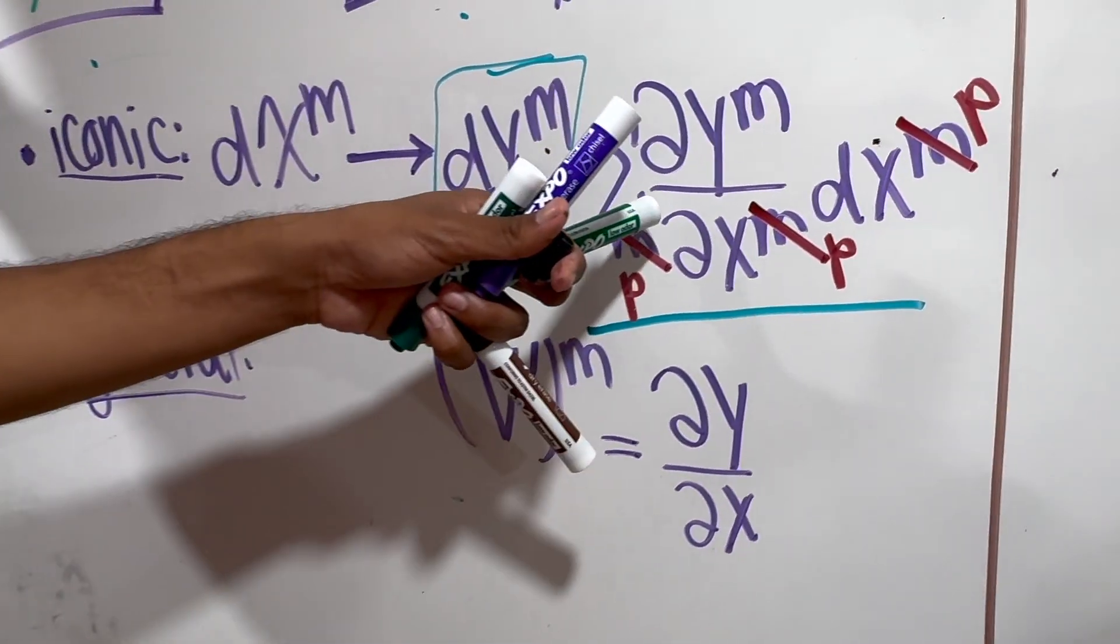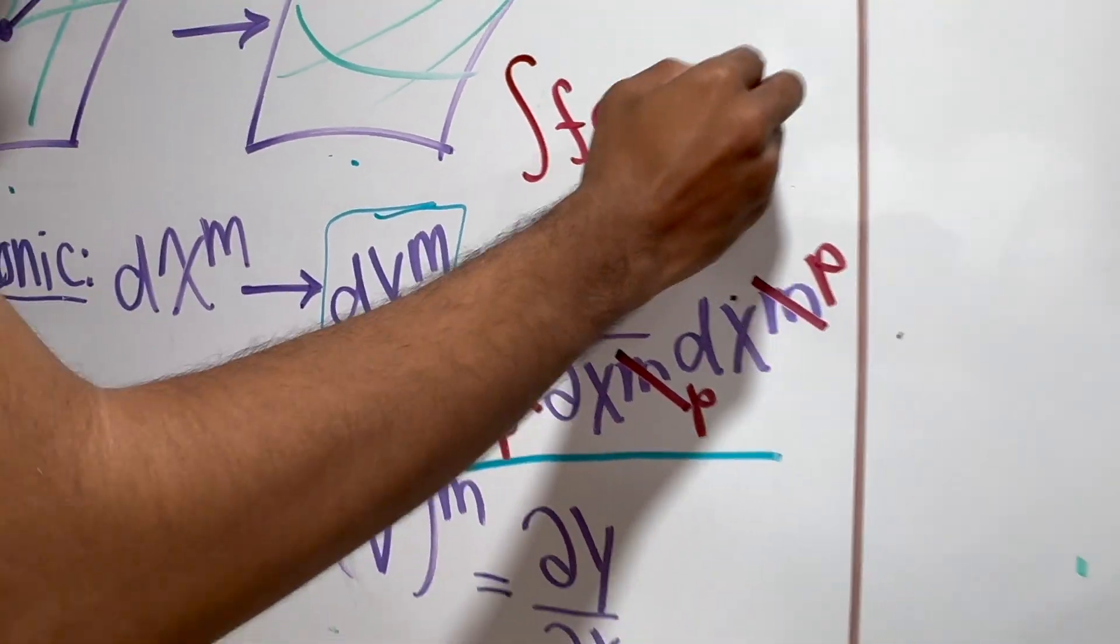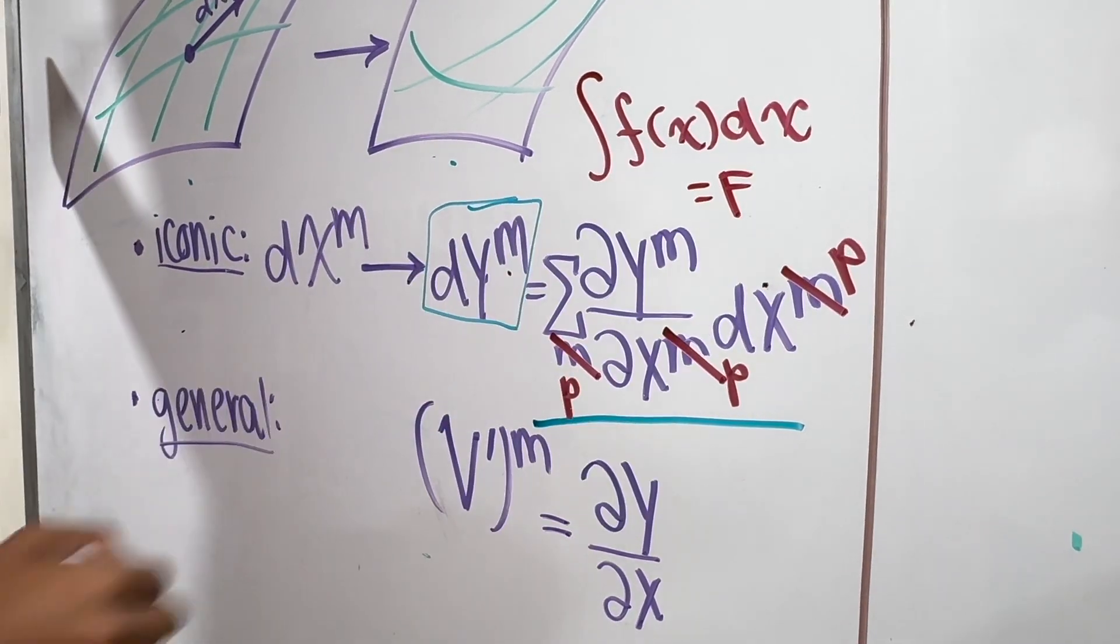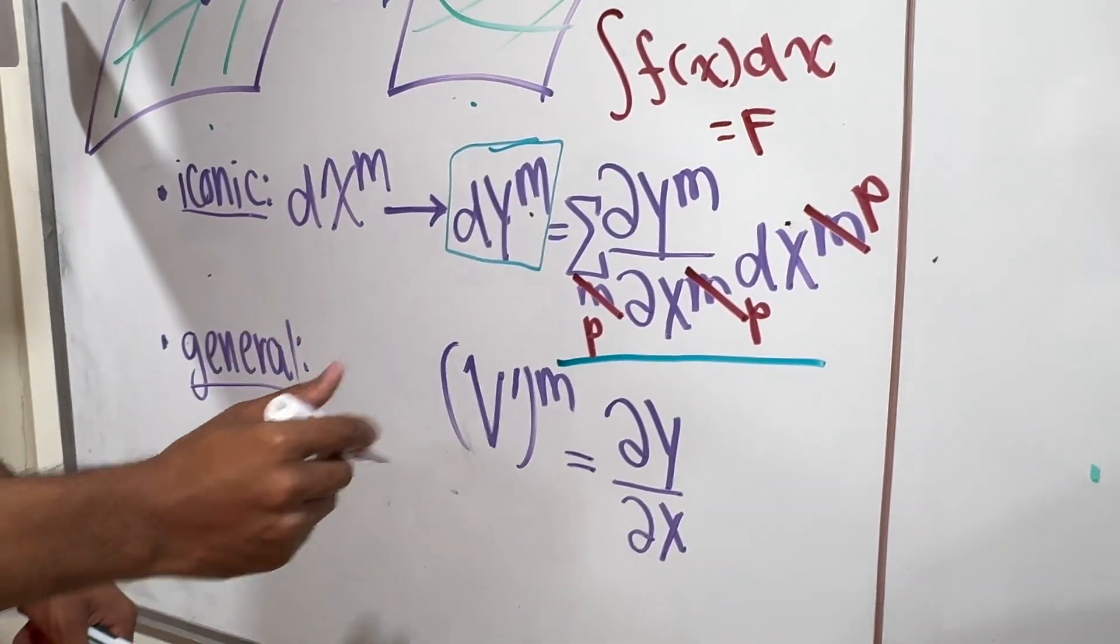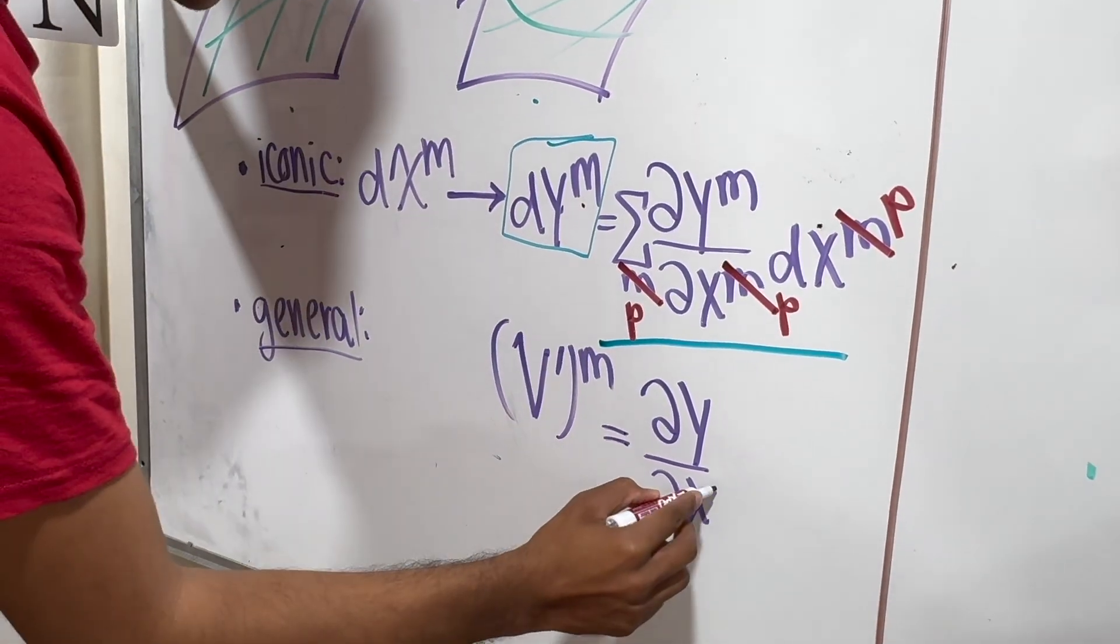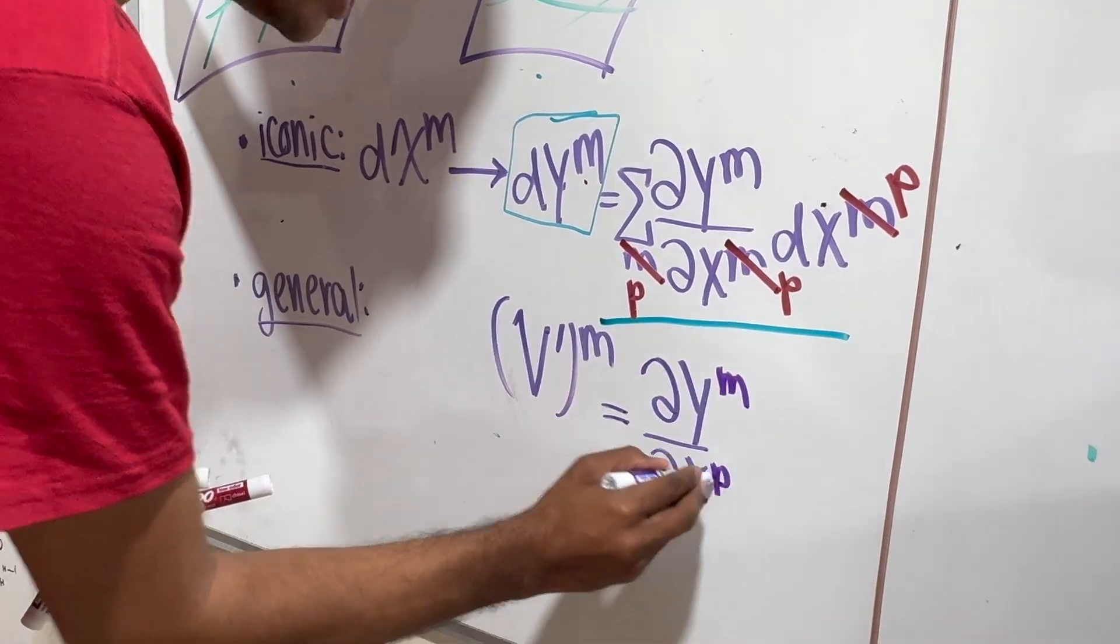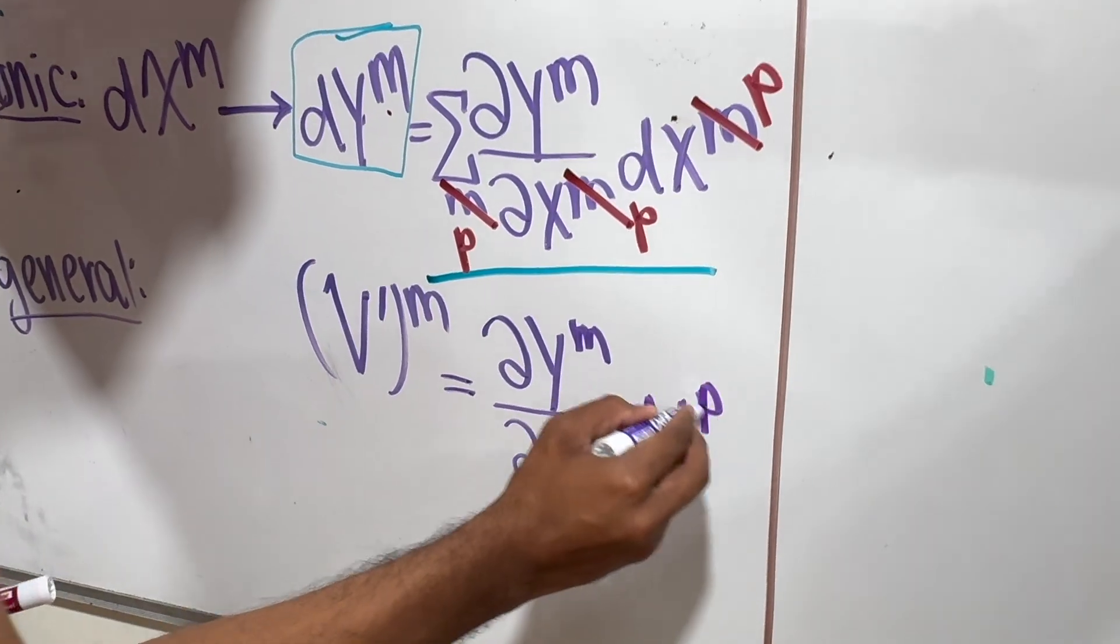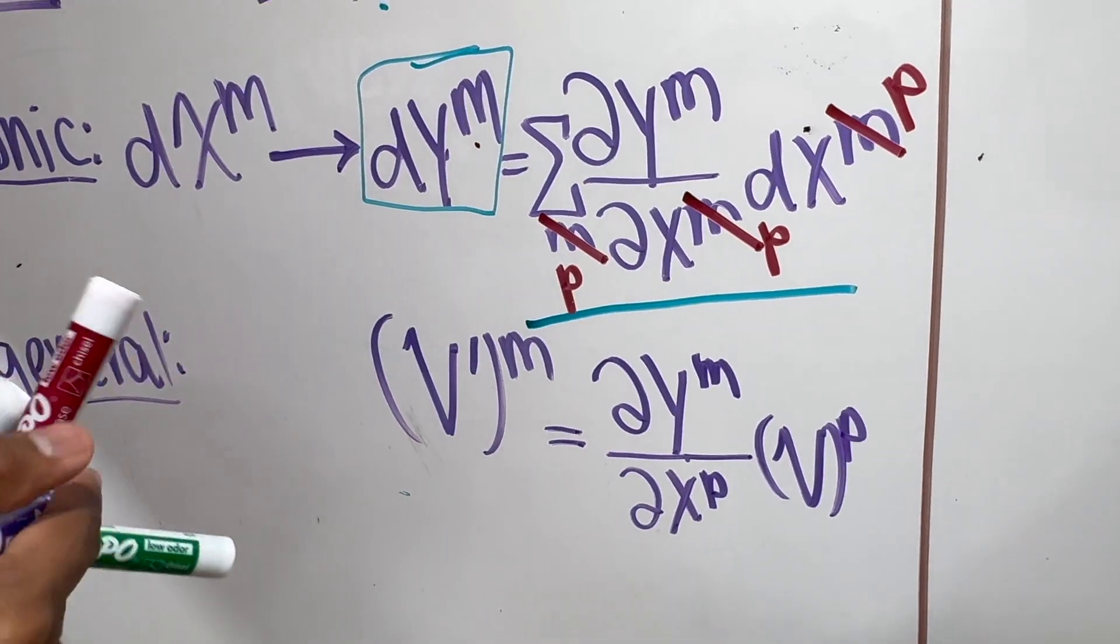This p, I sum over it so it does not show up in the final answer. But why can't it show up? Because for the same reason, when you integrate over a function with a certain variable, that variable will not show up in the final answer because you integrate it away. With respect to the limits. That's the idea. So, this is a dummy variable. I'm going to write partial y m, partial x p, and then write over here, v to the p power. That's all you need to know about contravariant tensors.